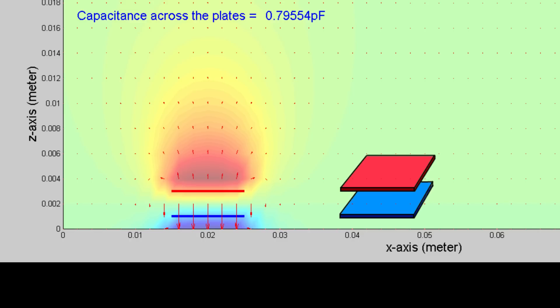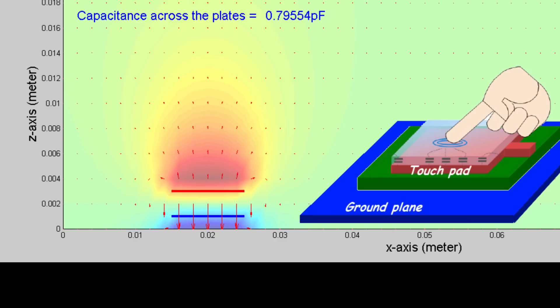In the classic parallel plate capacitor, the electric field is so confined in between the plates that the capacitance could hardly be influenced by the external object. This means that a touchpad directly above the ground plane is a poor capacitive transducer.